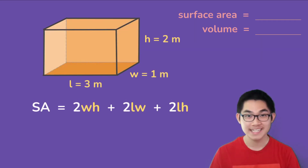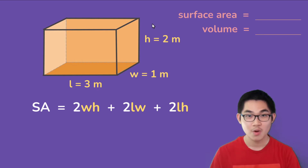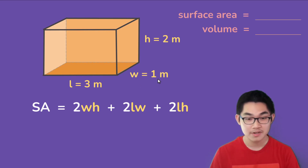Let's say that the length is 3 meters, the width is 1 meter, and the height is 2 meters. What is the surface area of this rectangular prism? Since we have the numbers, we can substitute them into the formula. The width is 1 meter, so we put 1 into this variable here and this one here.